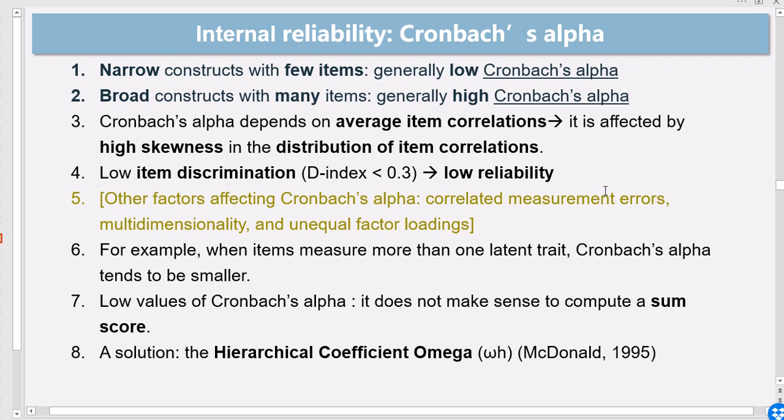And Cronbach's alpha is also sensitive to a few other features, one of them being the high skewness in the distribution of item correlations. Basically, you can estimate the skewness of the distribution of item correlations and see if the skewness is high. That might be one of the reasons why Cronbach's alpha is low.